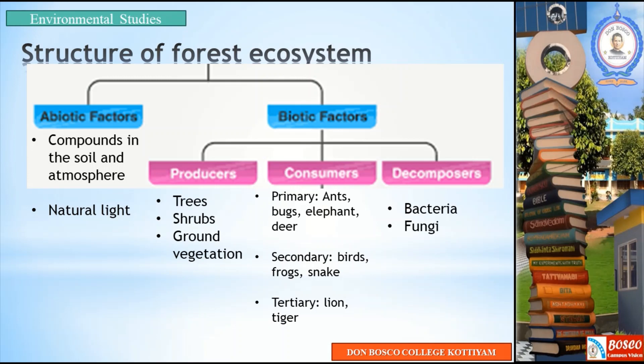In a forest ecosystem, the primary consumers are ants, bugs, elephants, and deer. Secondary consumers are birds, frogs, and snakes. Tertiary consumers are lions and tigers. The decomposers in a forest ecosystem are bacteria and fungi.